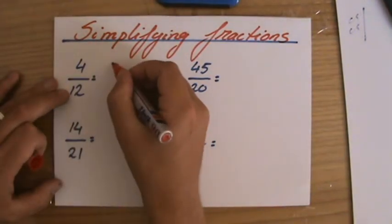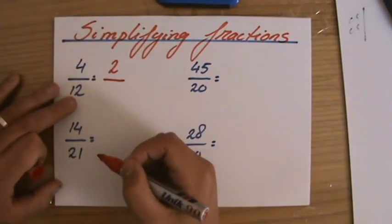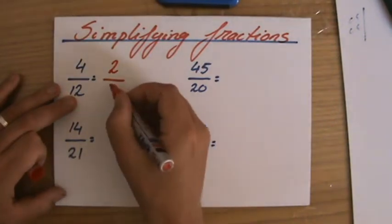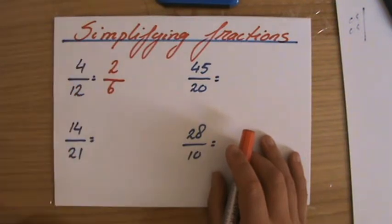Because I can divide 4 by 2. The answer of 4 divided by 2 is 2, and I can divide 12 by 2, and 12 divided by 2 is 6. So 4 over 12 is equivalent - is the same as 2 over 6.